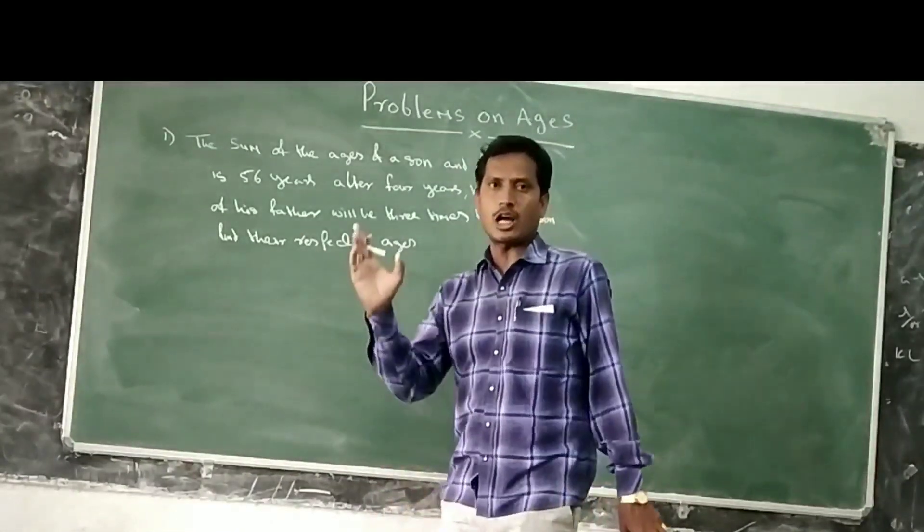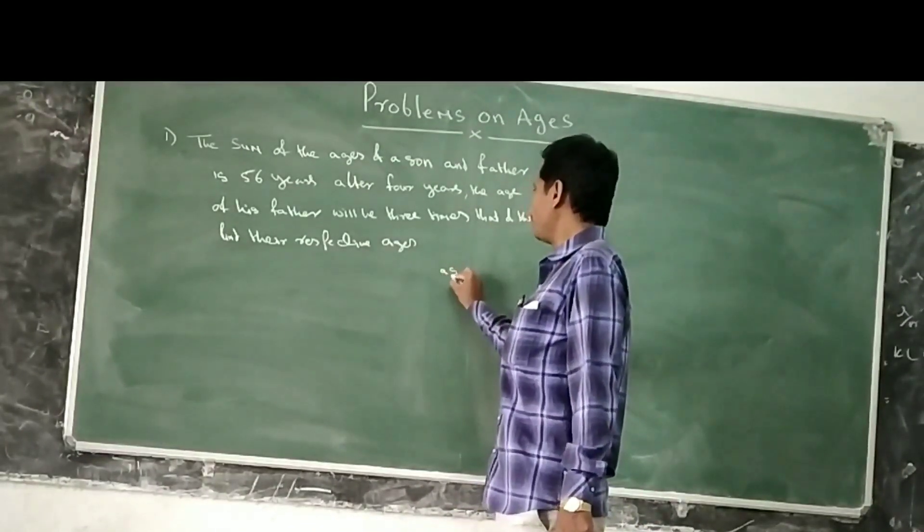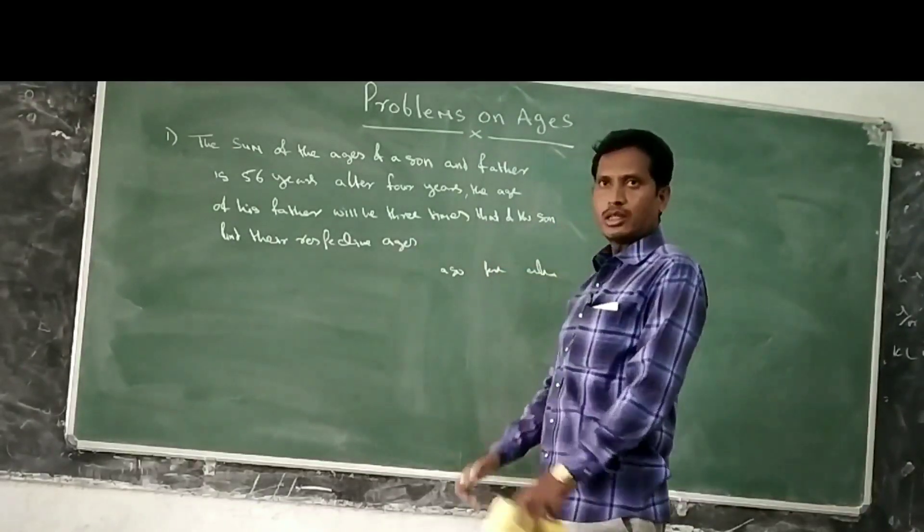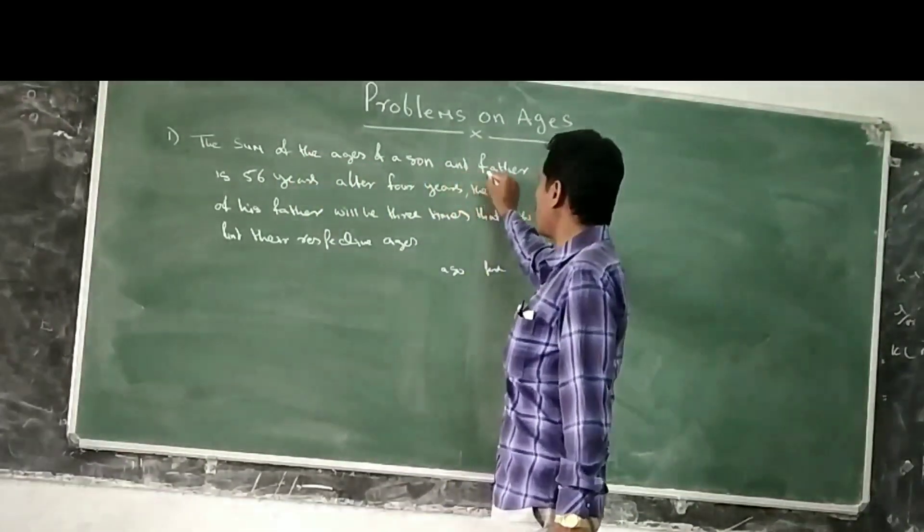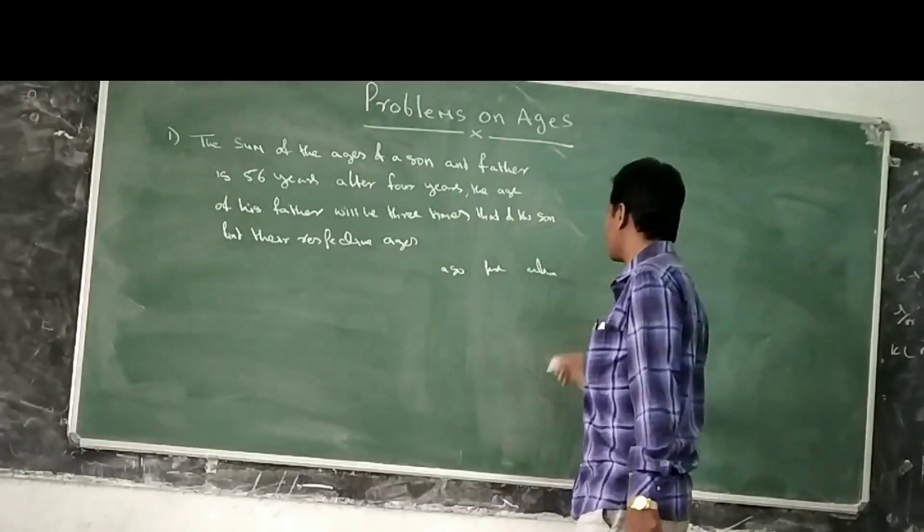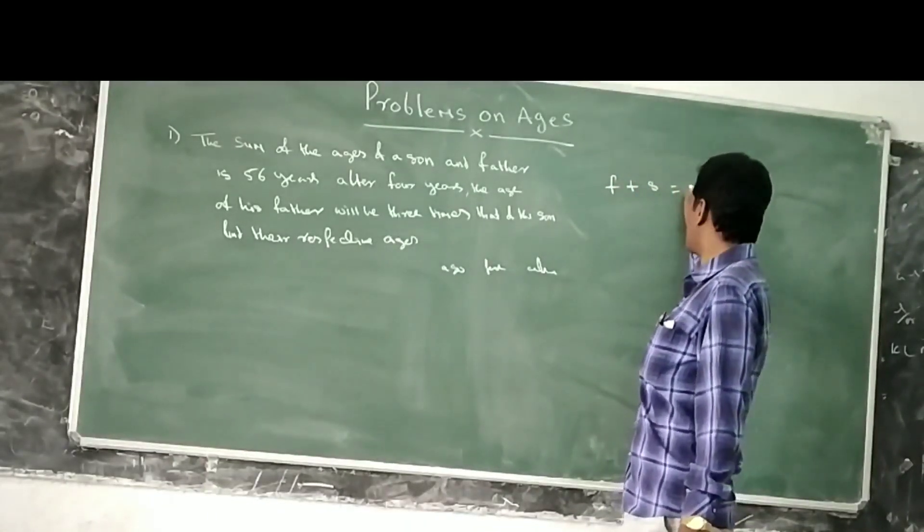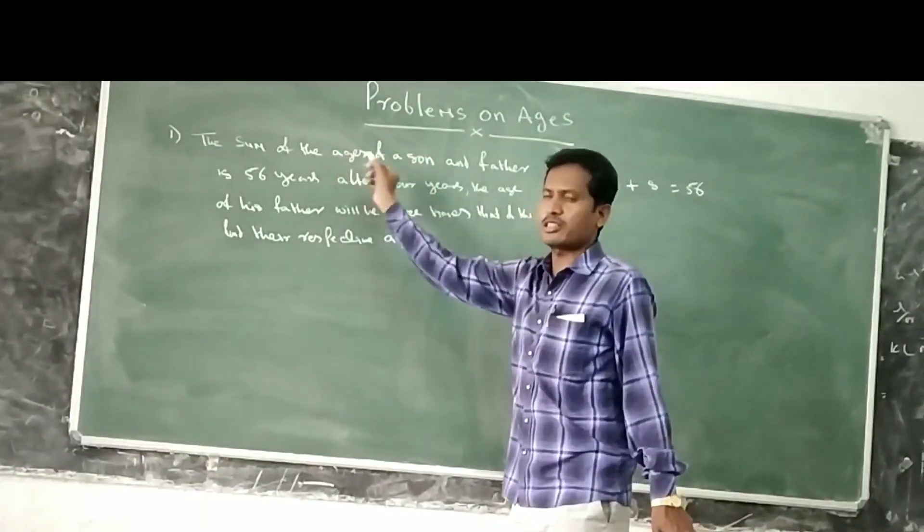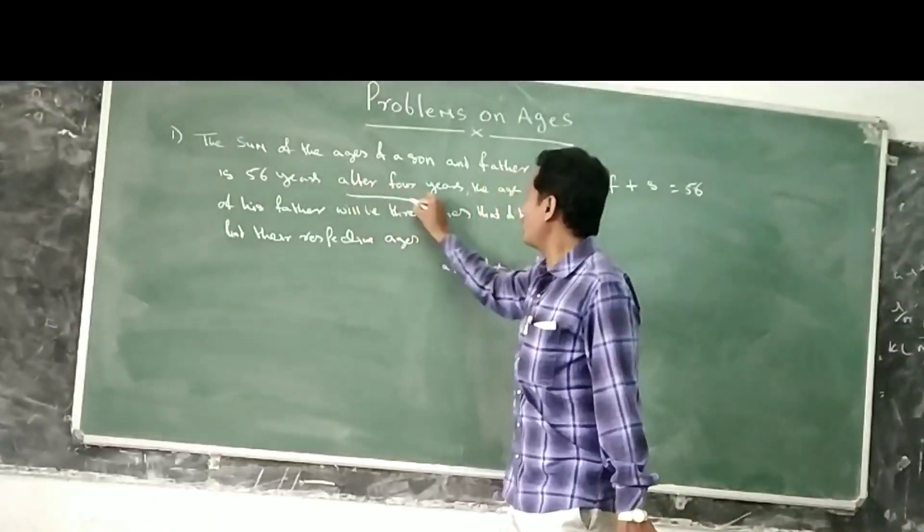First of all you have to prepare the table. The table is: above, present, after. See the first question. The sum of the ages of father and son is 56 years. That is father plus son equals 56 years. That is the present age. After 4 years...